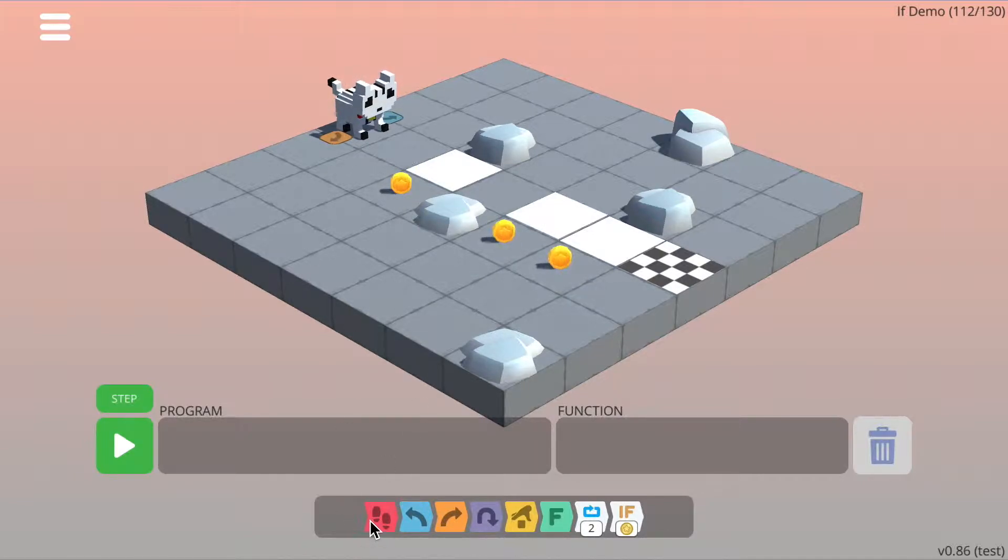So first of all, I'm going to add two walk commands and then I'm going to use a function. So we'll get to here and then I'll use a function to collect the coin. The reason why I'm going to use a function is that I can see that I'm going to collect three coins and so I can save space by using the function. So the function to collect the coin will be turn right, walk forward, pick up, turn around, walk forward, turn right.